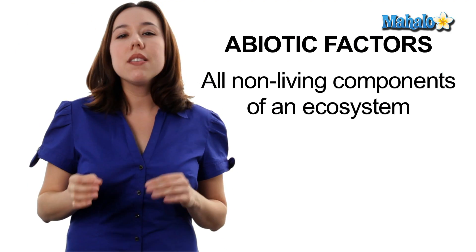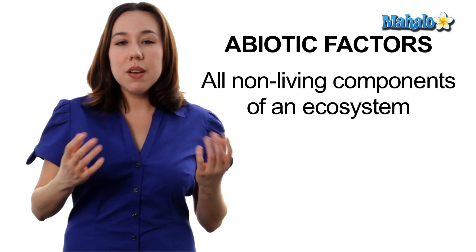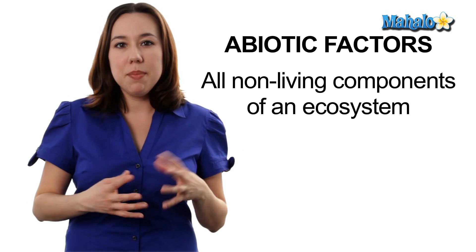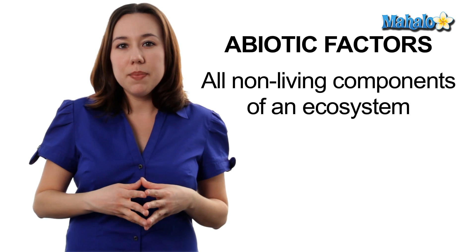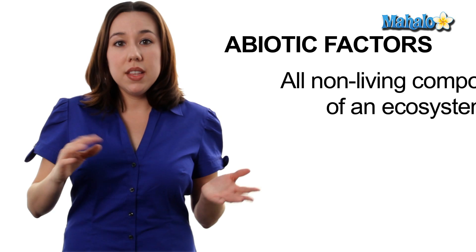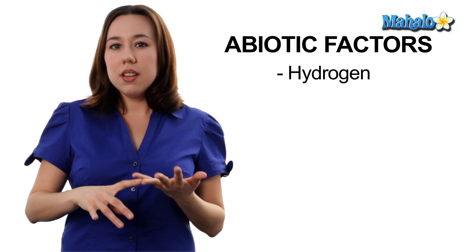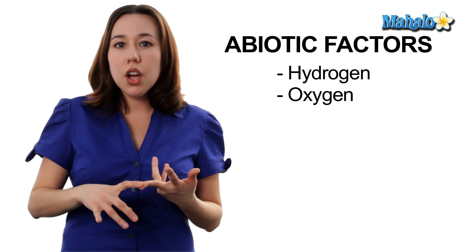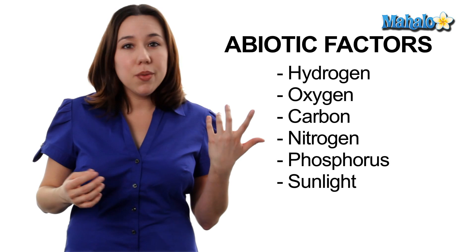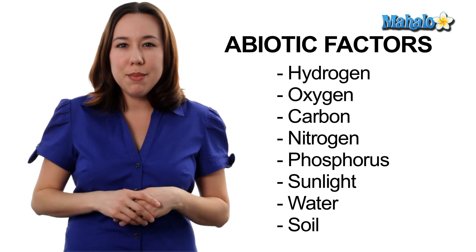Now, abiotic factors are non-living components. They're going to be things that help to allow life to happen in this ecosystem, but they themselves are not living. These are things again like hydrogen, oxygen, carbon, nitrogen, phosphorus, sunlight, water, and soil, just to name a few.